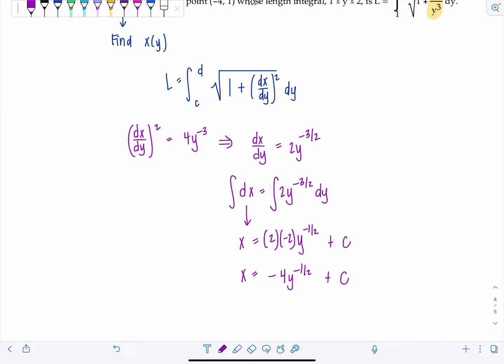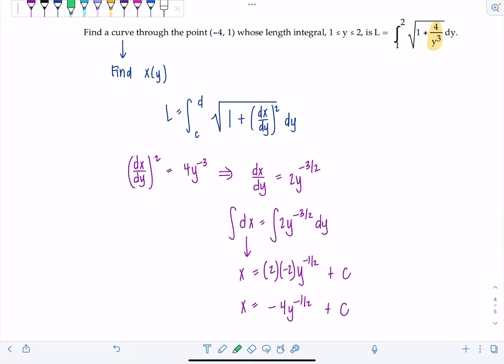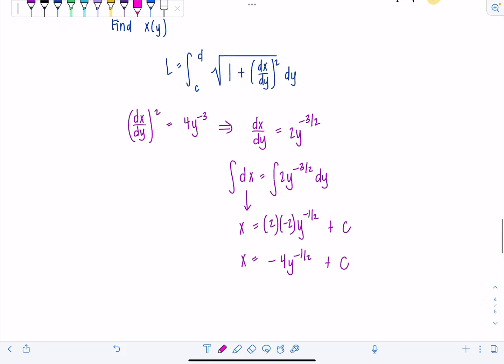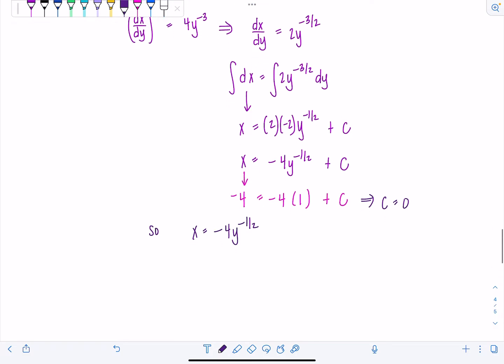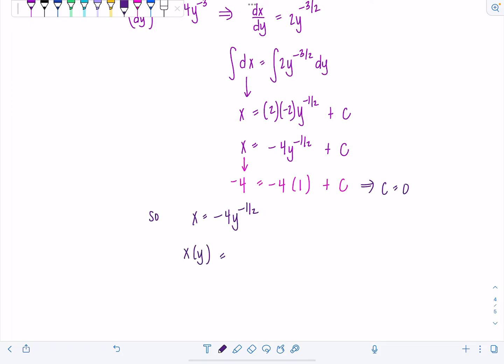So I can see right now x is equal to negative four y to the negative one half plus c. How can I find c? Well, they gave me a little extra info I haven't used yet. It told me that the curve goes through the point for negative one. So I'm going to substitute in negative four for x and one for y and find c. So x is negative four, y was one. And then I can see if I add four to both sides, c is just zero. So then we have x equals negative four y to the negative one half. And then I would write x as a function of y and then maybe rewrite things so it looks a bit better. So x of y is negative four over rad y. So that's the function or that is the curve whose arc length was given by the formula in the problem.